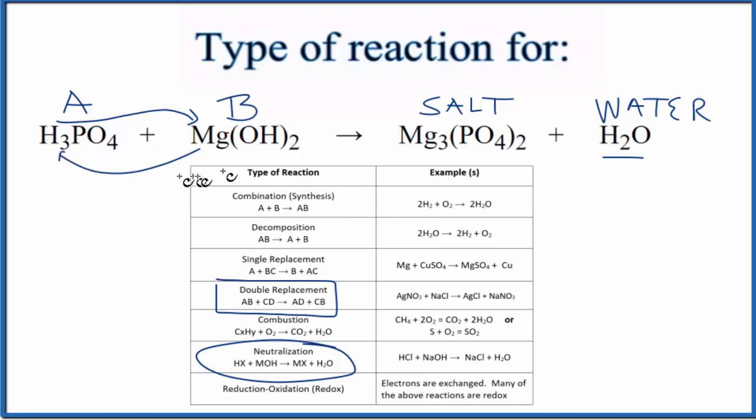Because of that, you have the hydrogen goes with the OH, that gives you HOH, H2O, and then you have the magnesium going with the phosphate. So you get this magnesium phosphate.